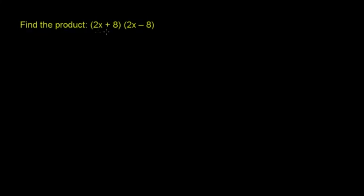For this problem, we have 2x plus 8 times 2x minus 8. We'll use the FOIL method or distributive property, as in the previous case.